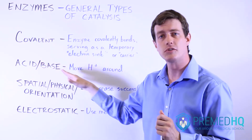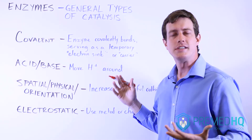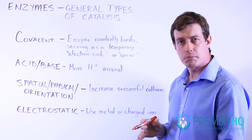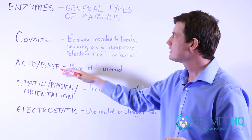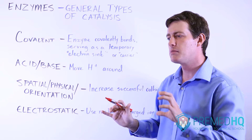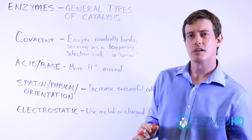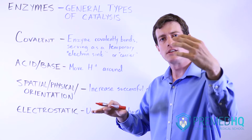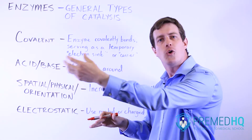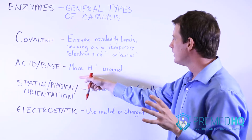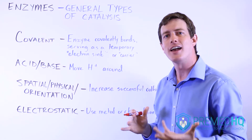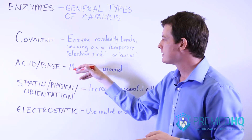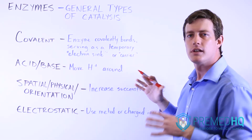Acid-base catalysis is fairly straightforward. Remember that although there are different definitions including the Lewis definition, you tend to see acids and bases coming into play when dealing with proton exchange — you're moving protons around. Acid-base catalysis involves the enzyme serving to either accept a proton from the substrate, donate a proton to the substrate, or help transfer a proton from one substrate to another. Whatever it needs to do involving these positively charged hydrogen ions in order to make the reaction occur.